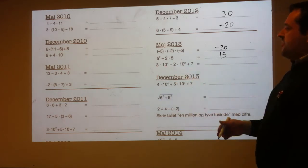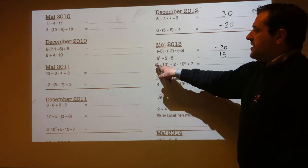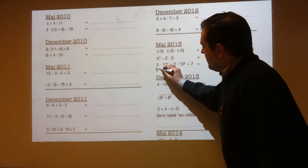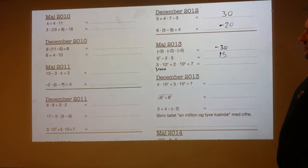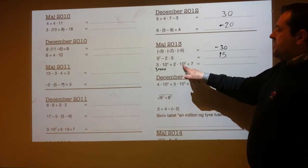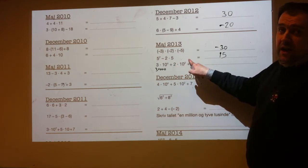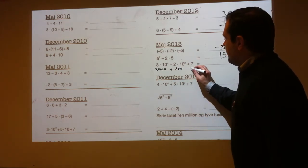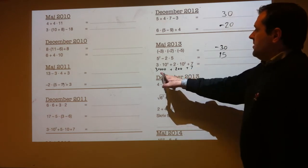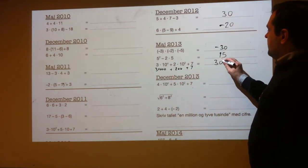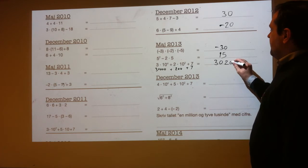3 times 10 to the 4: 10 to the 4 is 10,000, and 3 times that is 30,000. 2 times 10 squared: 10 squared is 100, and 2 times that is 200. So it's the same as 30,000 plus 200 plus 7, which is 30,207.